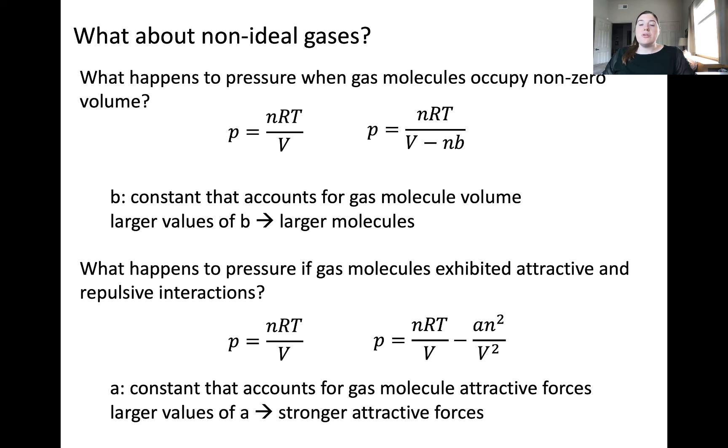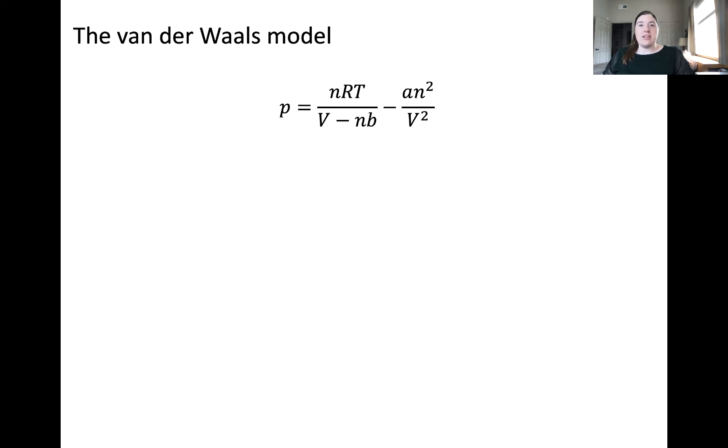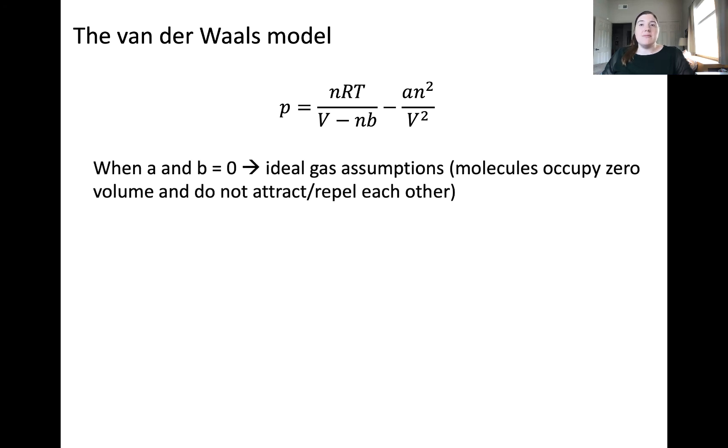These two corrections to the ideal gas law are combined into what's called the van der Waals model. This is used to model so-called real gases. It can be shown that when a and b equal to zero, the van der Waals equation reduces to the ideal gas equation.